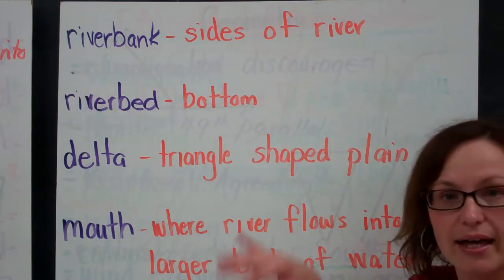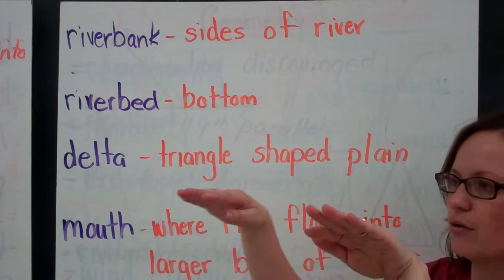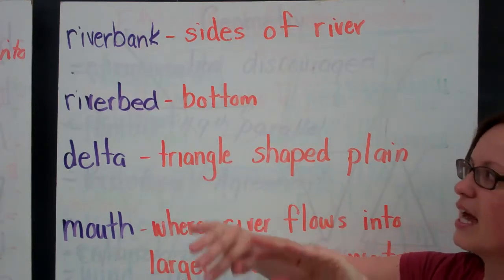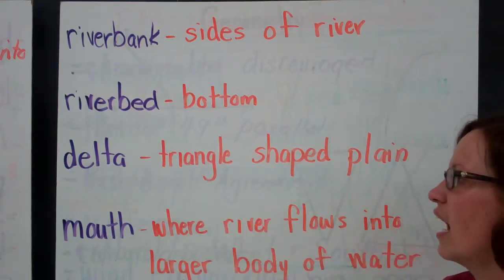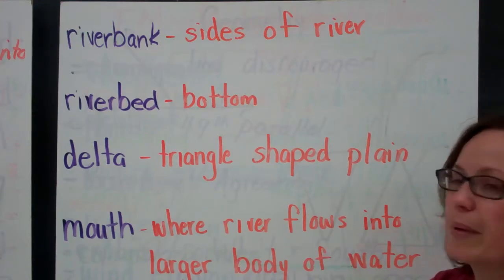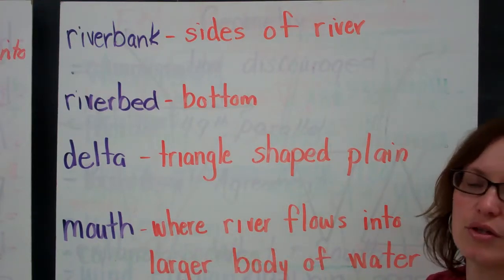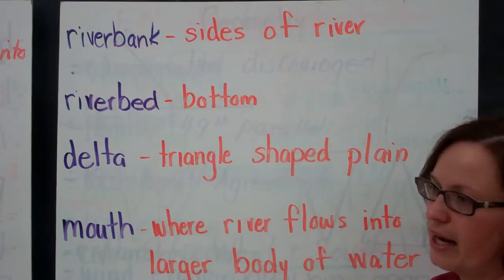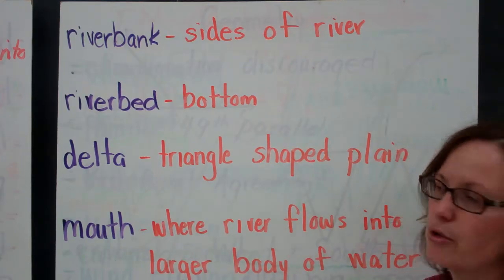The riverbank is the sides of the river, so you have the river depressing into the earth's surface and then you have the riverbanks on either side at a higher elevation. The riverbed is the bottom of the river, so if I was to eliminate all of the water, the bottom would be the riverbed.